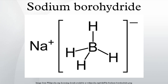Synthesis and handling: Sodium borohydride is prepared industrially following the original method of Schlesinger. Sodium hydride is treated with trimethylborate at 250–270°C: B(OCH3)3 + 4 NaH → NaBH4 + 3 NaOCH3. Millions of kilograms are produced annually, far exceeding the production levels of any other hydride reducing agent. Sodium borohydride can also be produced by the action of NaH on powdered borosilicate glass.